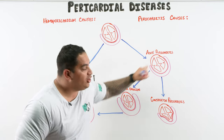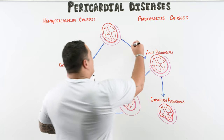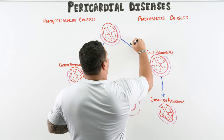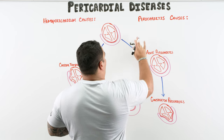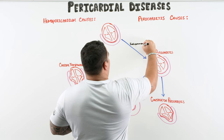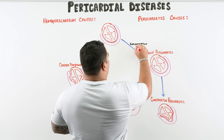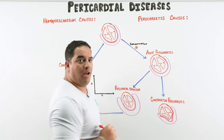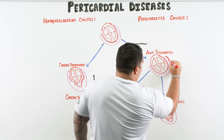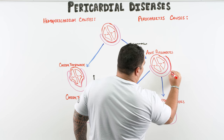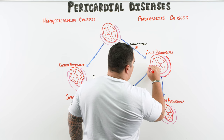When a patient develops acute pericarditis, they develop inflammation of their pericardium — that's the underlying process. There's some type of inflammation causing the pericardium to become angry, and we'll talk about what those causes are in just a second.